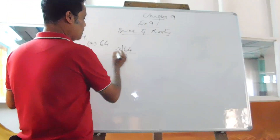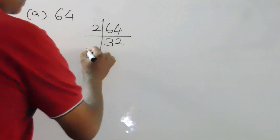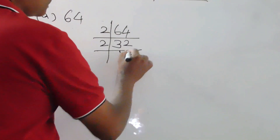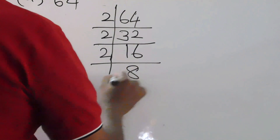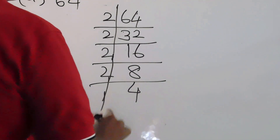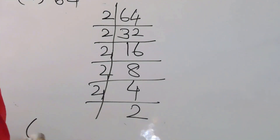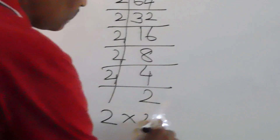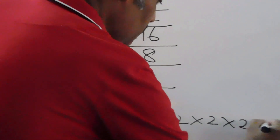Dividing 64 by 2 gives 32. Again, 32 divided by 2 gives 16. 16 divided by 2 gives 8. 8 divided by 2 gives 4. 4 divided by 2 gives 2. So 64 is equal to 2 into 2 into 2 into 2 into 2 into 2.